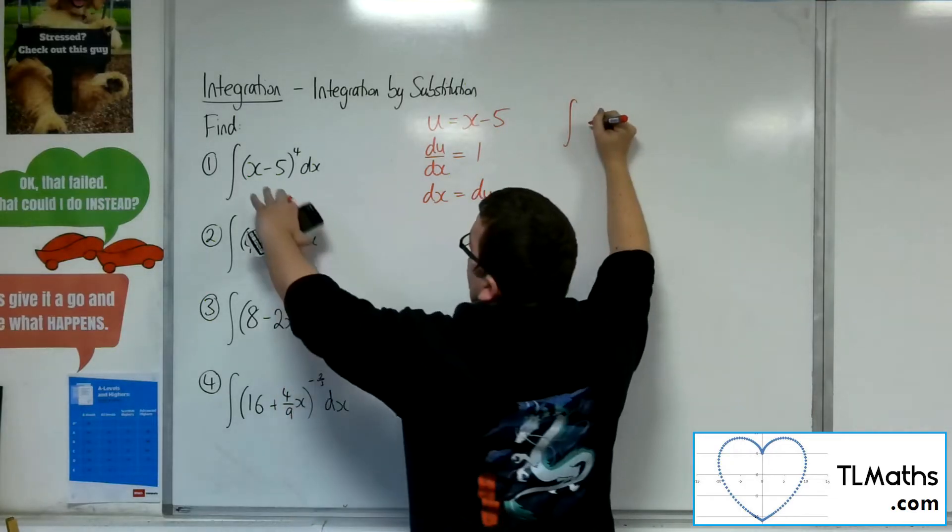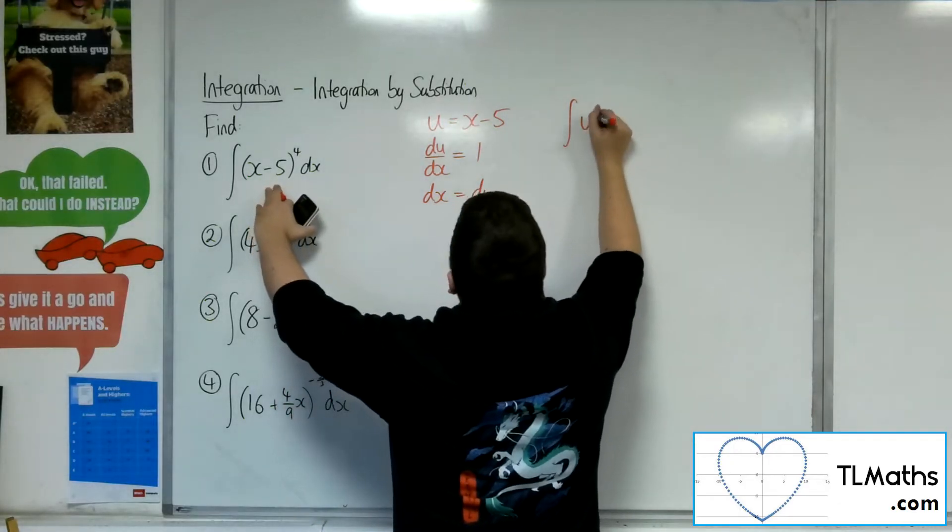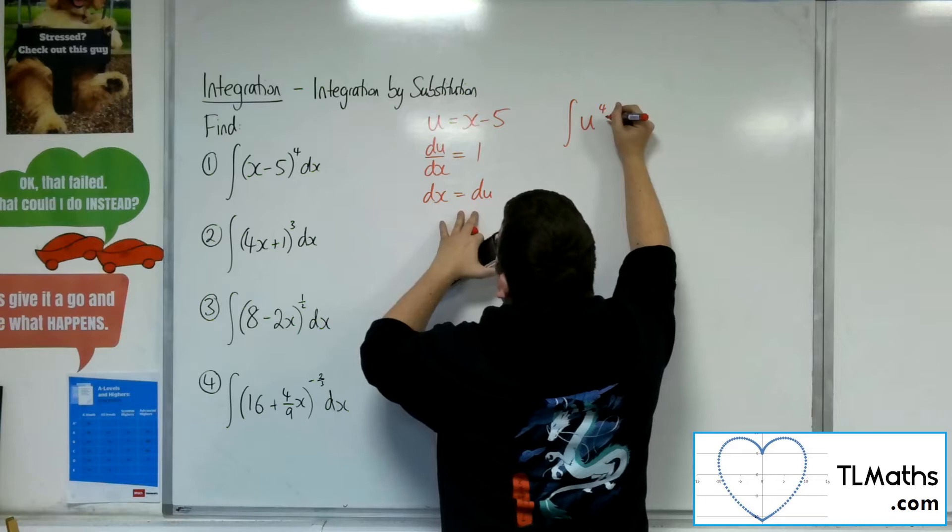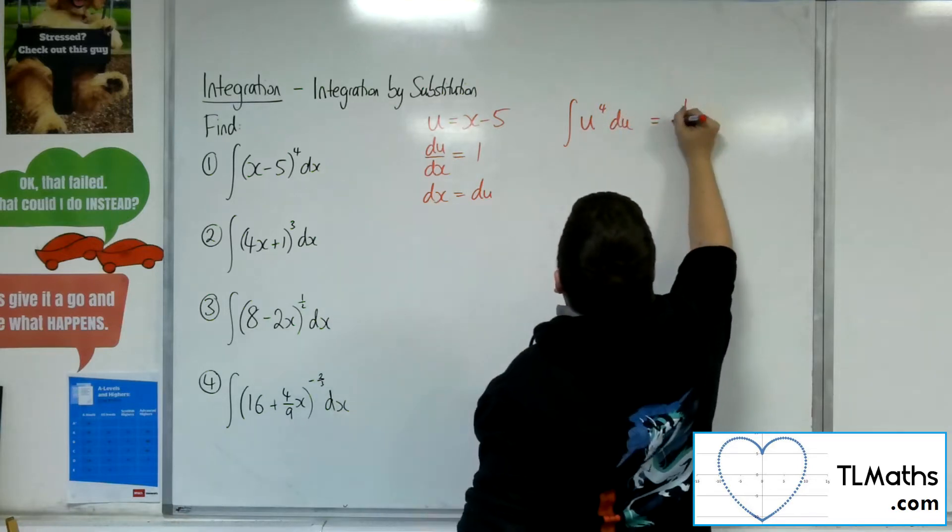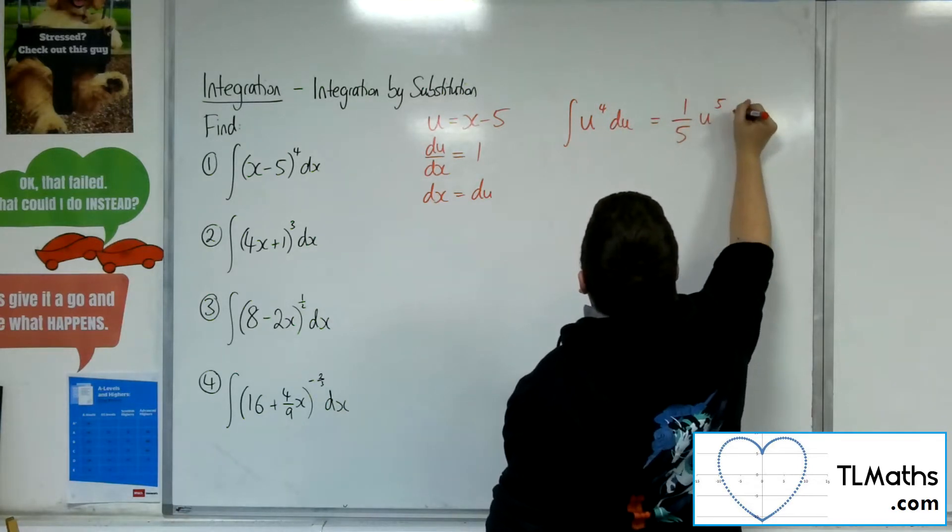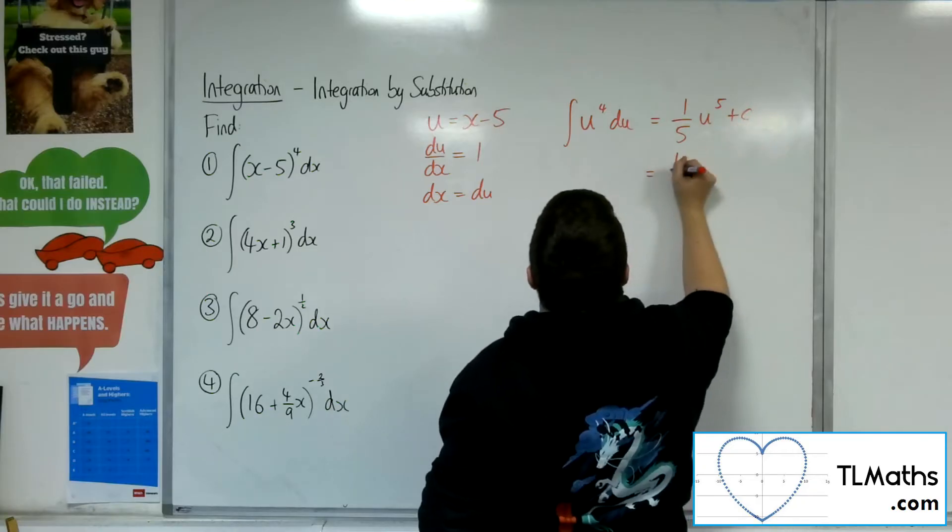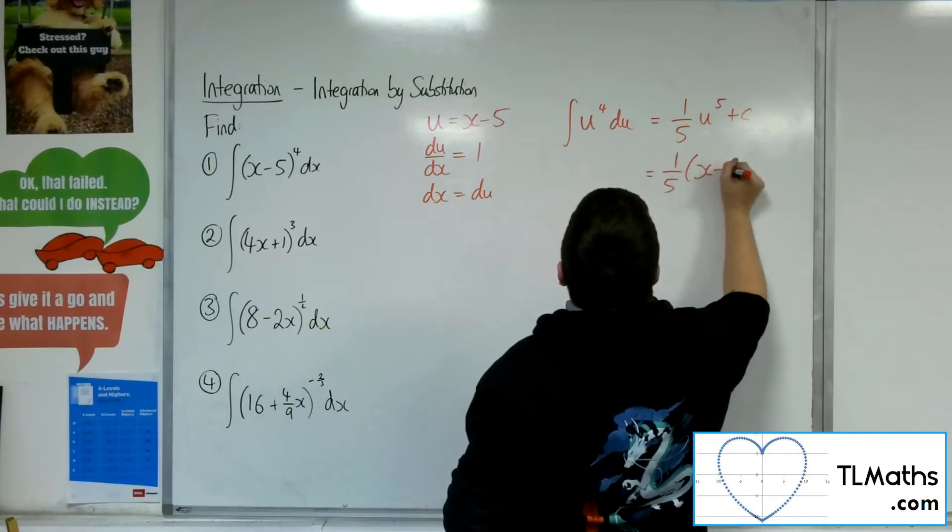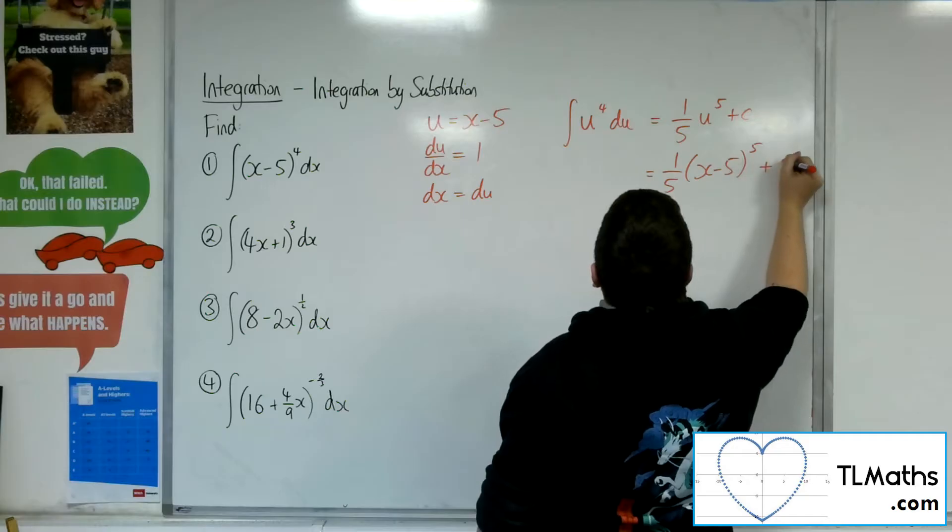So we have the integral of x minus 5 to the 4, so u to the 4, and the dx is replaced with du. So that would be 1 fifth u to the 5 plus c. Substitute the u back in, and we're done.